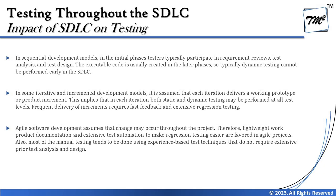Agile development assumes that change may occur throughout the project, so lightweight product documentation and extensive test automation are favored to make regression testing easier. Most manual testing in agile tends to use experience-based test techniques and does not require extensive prior test analysis and design. Test cases can be written and even executed within the same sprint, creating a dynamic and fast-paced testing environment.